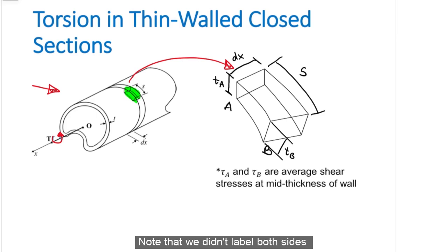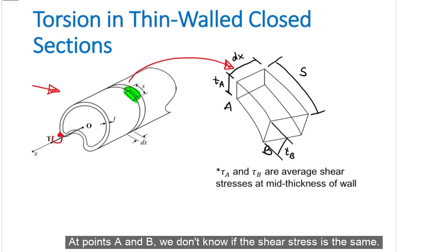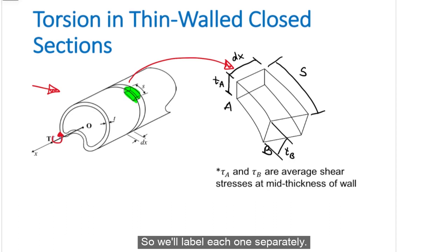Note that we didn't label both sides with just T because we're not 100% sure that the thickness at points A and B are the same. The same can be said for shear stress as well. At points A and B, we don't know if the shear stress is the same, so we'll label each one separately. This would be tau B, and this side would be tau A.